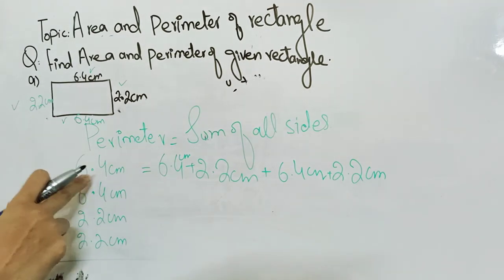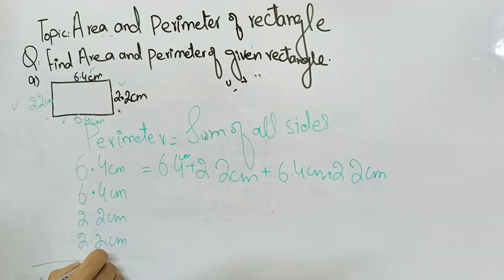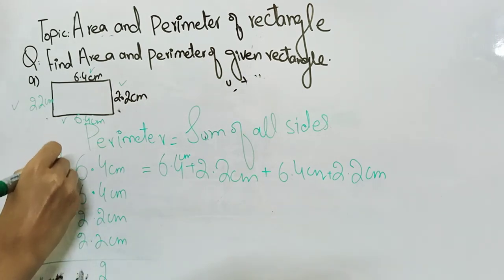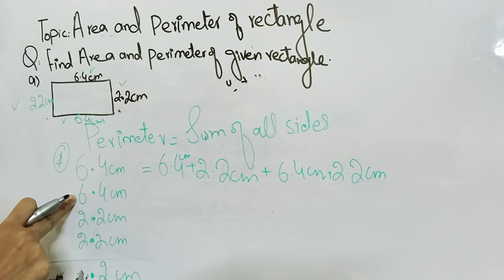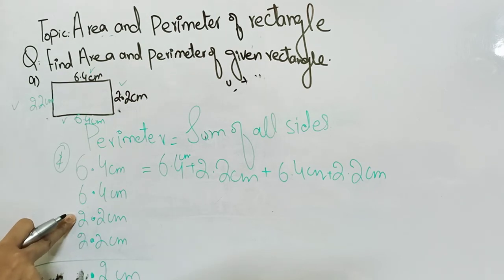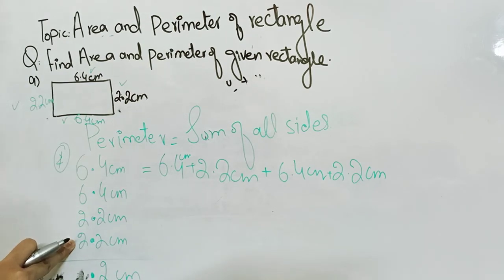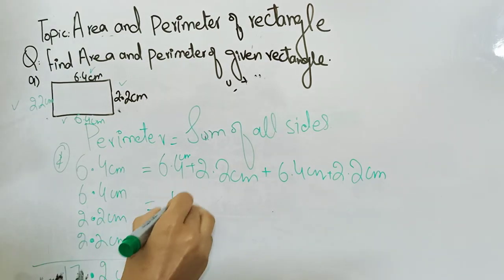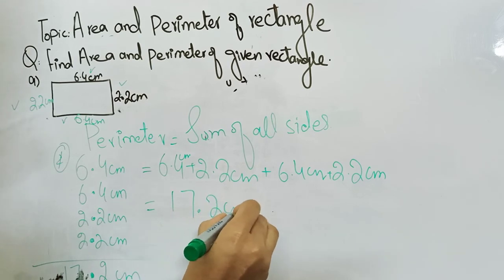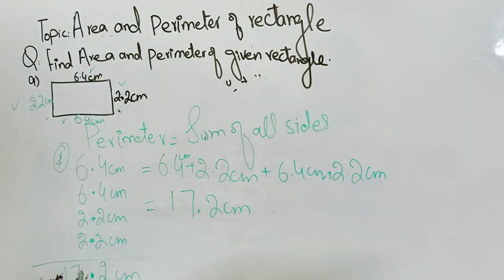Four and four is eight, plus four is twelve — write two, one goes carry. Then we place the decimal. Six plus six is twelve, twelve plus two is fourteen, fourteen plus two is sixteen, sixteen plus one is seventeen. So the perimeter is seventeen point two centimeters. In this way we can calculate the area and perimeter of the given rectangle.